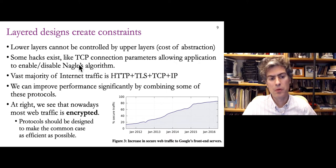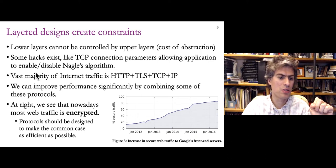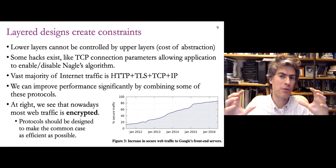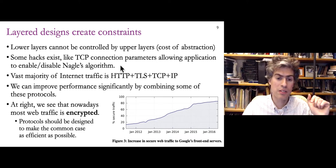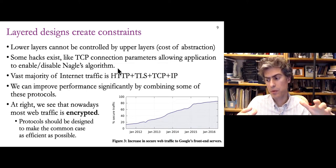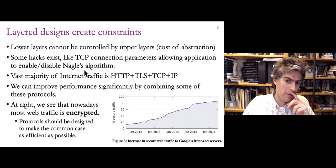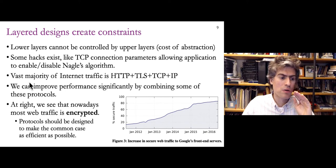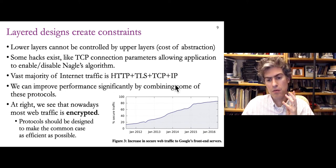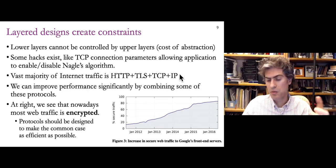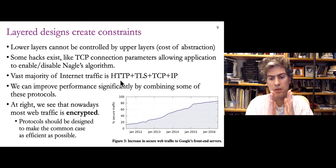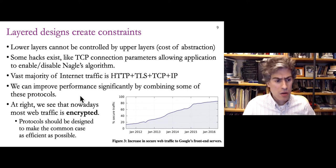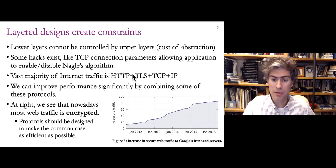There are some leaky abstractions — like TCP having connection parameters that allow an application to control some of what TCP is doing, like how it breaks data into packets (Nagle's algorithm was an example). But for the most part, the abstraction hides details. The vast majority of internet traffic uses a stack of four protocols: HTTP, TLS, TCP, and IP — this has become the new narrow waist of the internet. If we can improve performance significantly by combining some of these four protocols, it might be a good idea since this combination is so common.